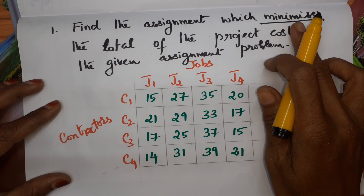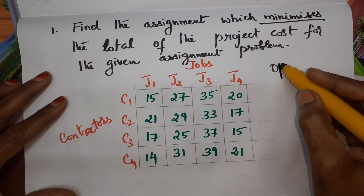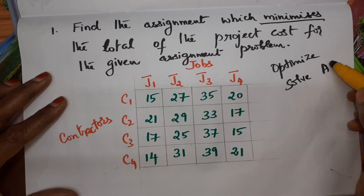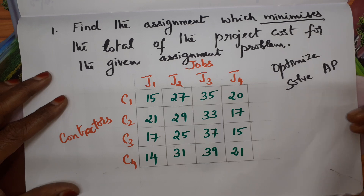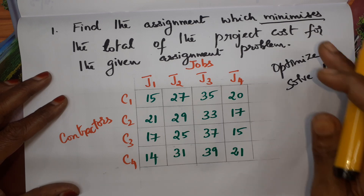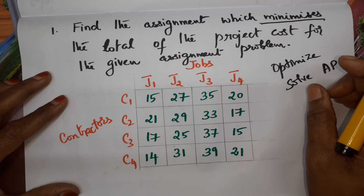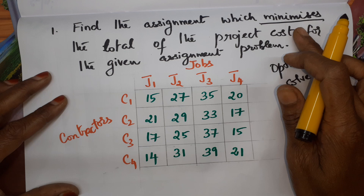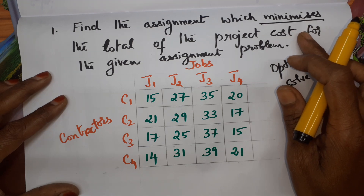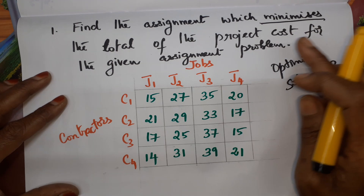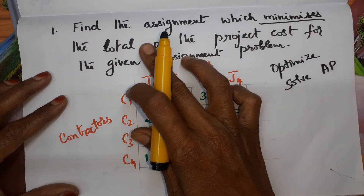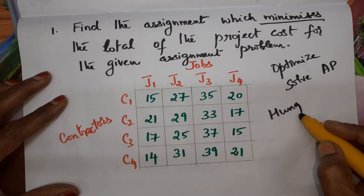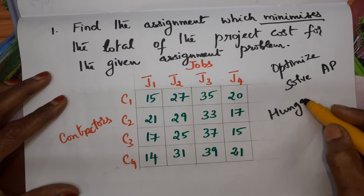In your question, if it says minimize, optimize, or solve the given AP, we proceed directly. If it is maximize, we have to do one extra step at the beginning — I will teach you that in the next video. This problem is to minimize the given project cost in order to find the optimum assignment schedule. For that, we are going to use a method called the Hungarian method.